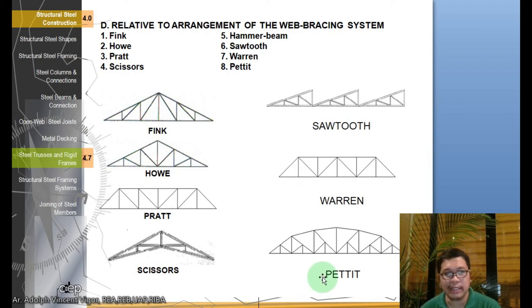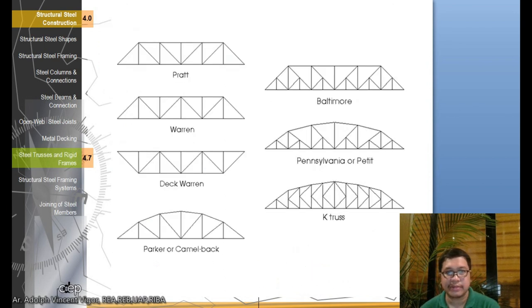You have the Petit, you have the Pratt. The only difference is how the web members are arranged. Then you have the Deck Warren, the Parker or Camelback which looks like the back of a camel, then you have the Baltimore, the Pennsylvania or Petit, and you have the K-truss. So familiarize yourselves with the basic layout of trusses.